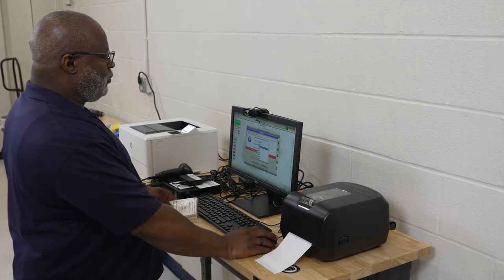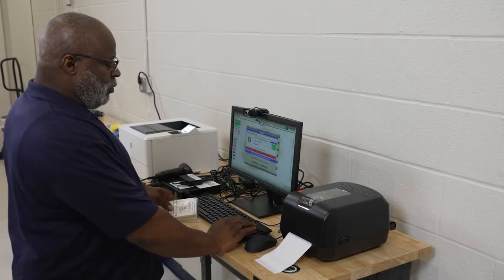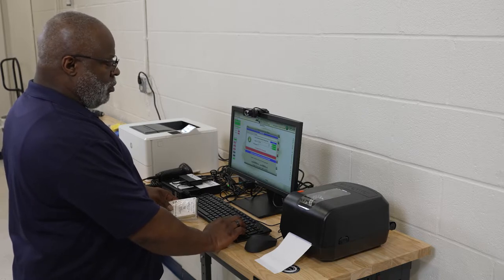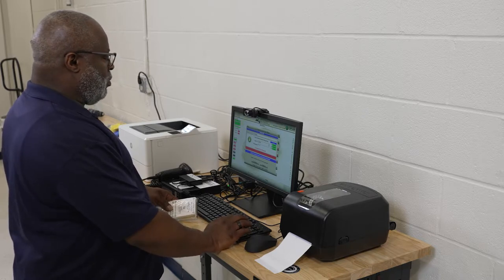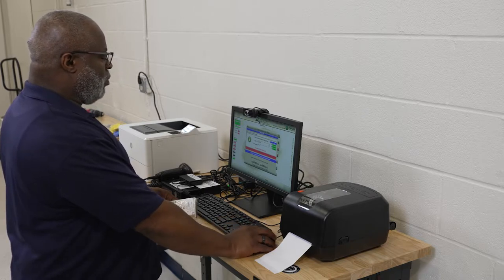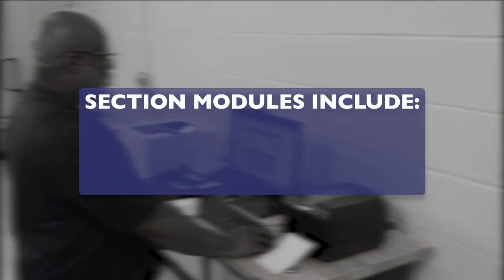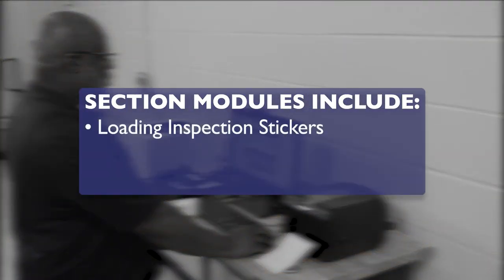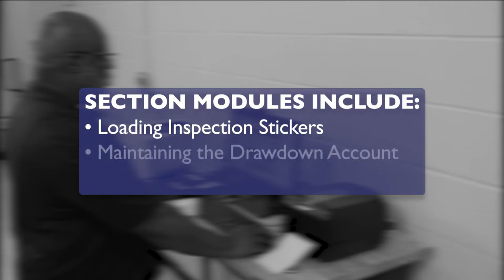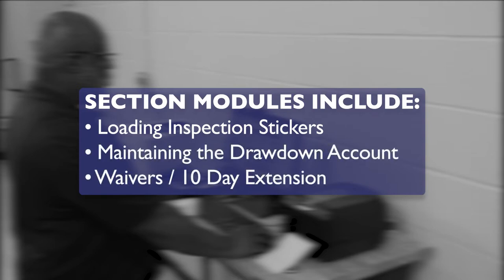This section provides guidance on station management and administrative functions performed to support vehicle inspections and the NYVIP3 software. Section modules include loading inspection stickers, maintaining the drawdown account, waivers, and 10-day extension.